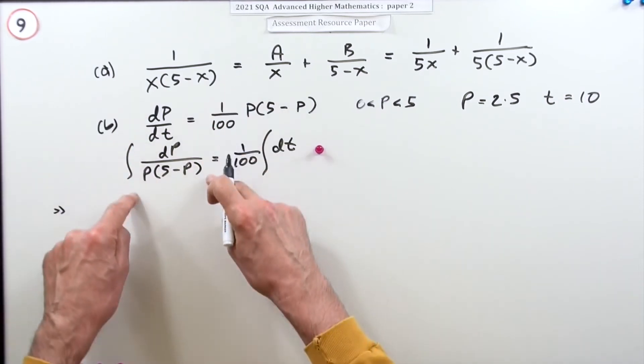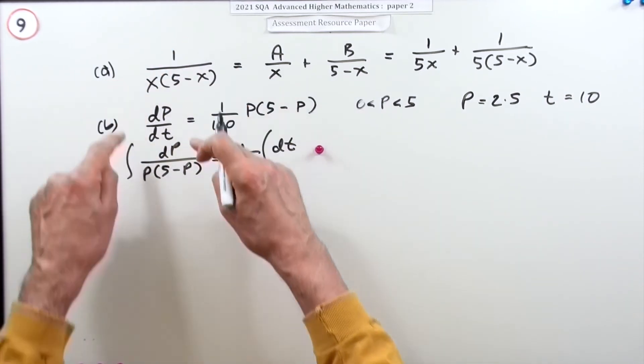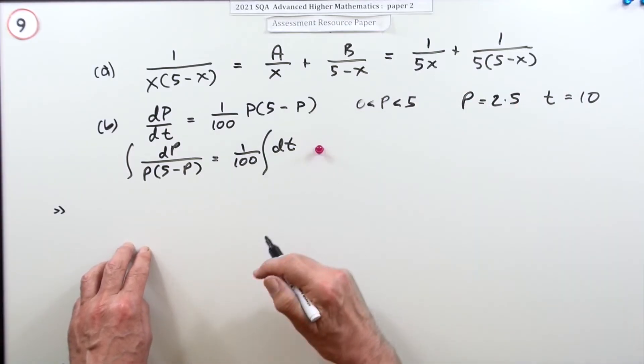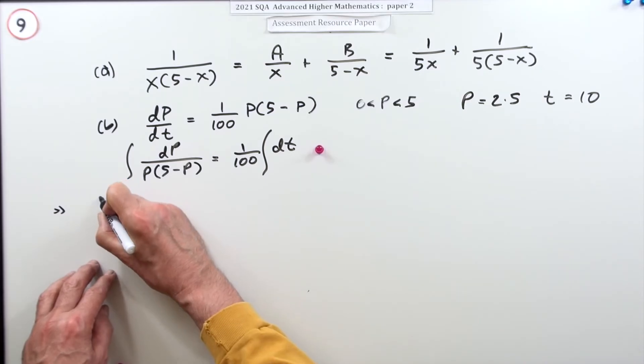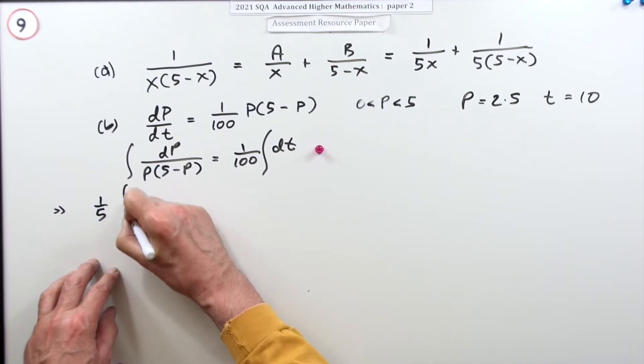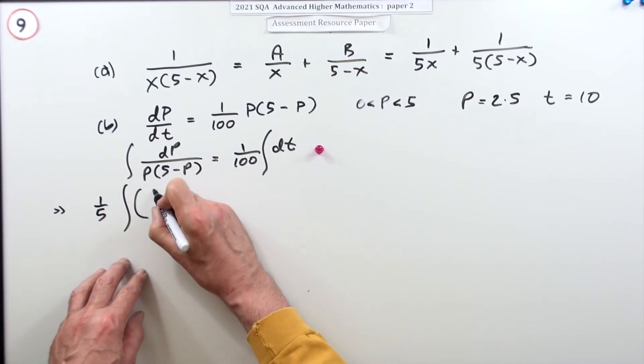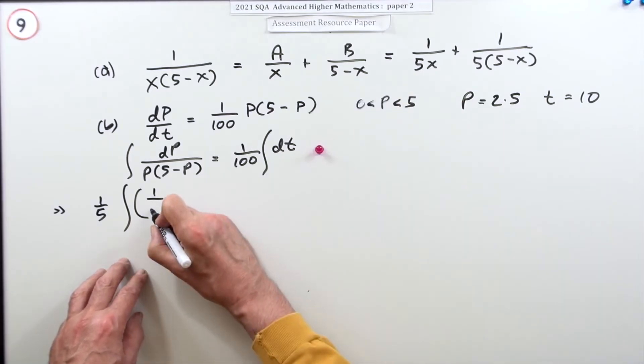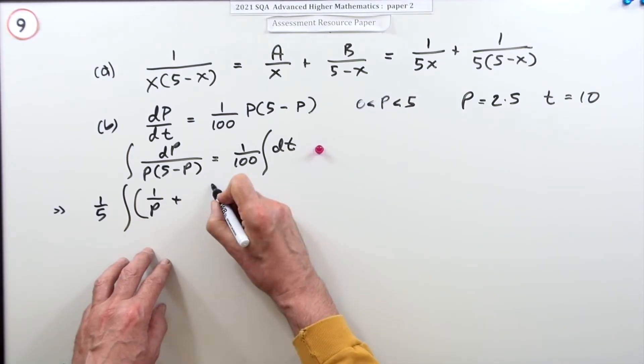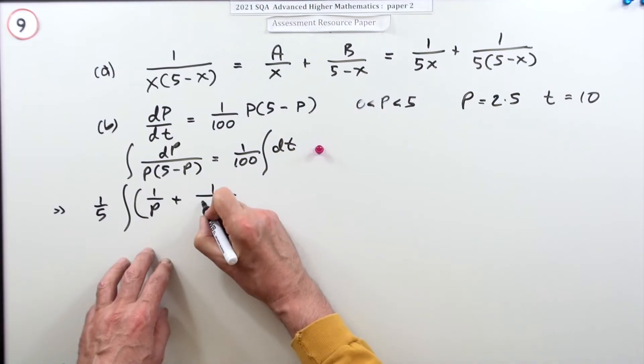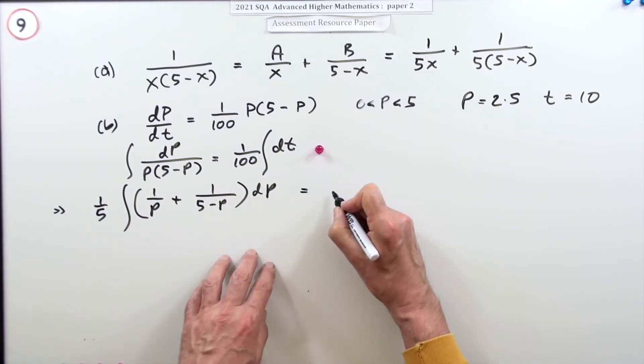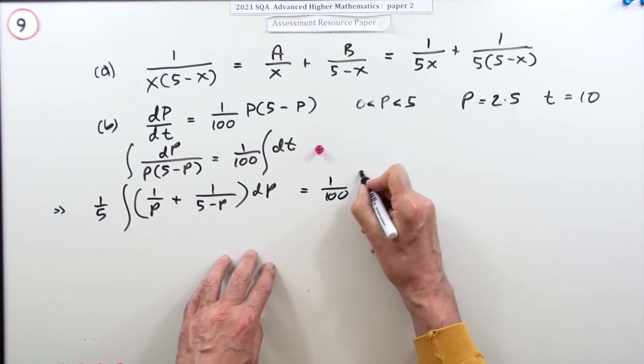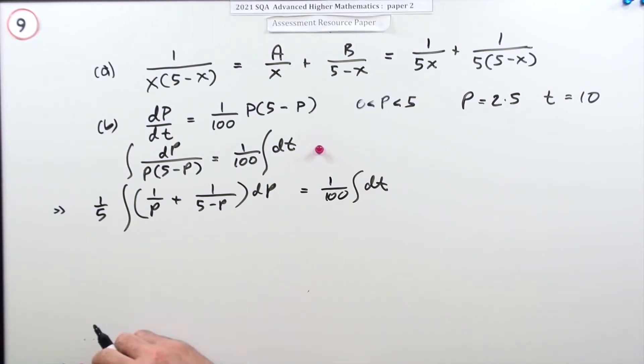Now this part, that's the same as this: 1 over x(5 minus x), 1 over P(5 minus P). So you can just use that final result now. There's a fifth in common, so I'll just take that out right now. So one-fifth of the integral of, and that will just be 1 over, instead of x I put P, plus 1 over, instead of 5 minus x I'll put 5 minus P, dP is 1/100 of the integral of dt. That's worth a mark.